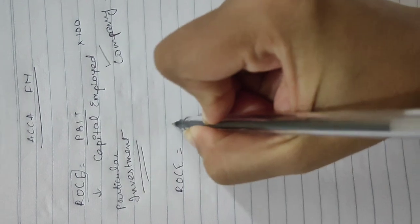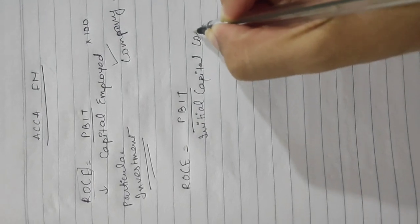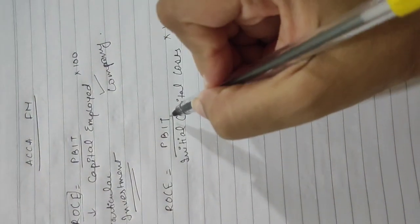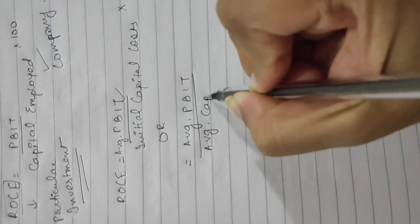For investment appraisal, ROC equals PBIT of that project — profit before interest and tax — upon initial capital costs, multiplied by 100. We express ROC in percentage terms only. There is a second formula: average PBIT upon average capital investment. Let's understand all the terms involved.